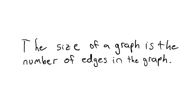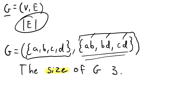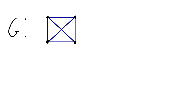Just to look at that definition written out again: the size of a graph is the number of edges in the graph. We saw back here three edges in the graph G, three edges in the edge set. Thus, the size is three.